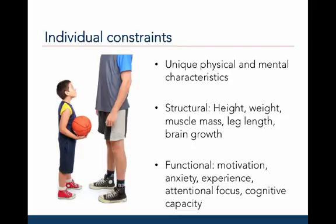In this picture, there are many obvious differences in the structural constraints between these two basketball players. Functional constraints, on the other hand, include factors such as motivation, anxiety, experience, attentional focus, or cognitive capacity.